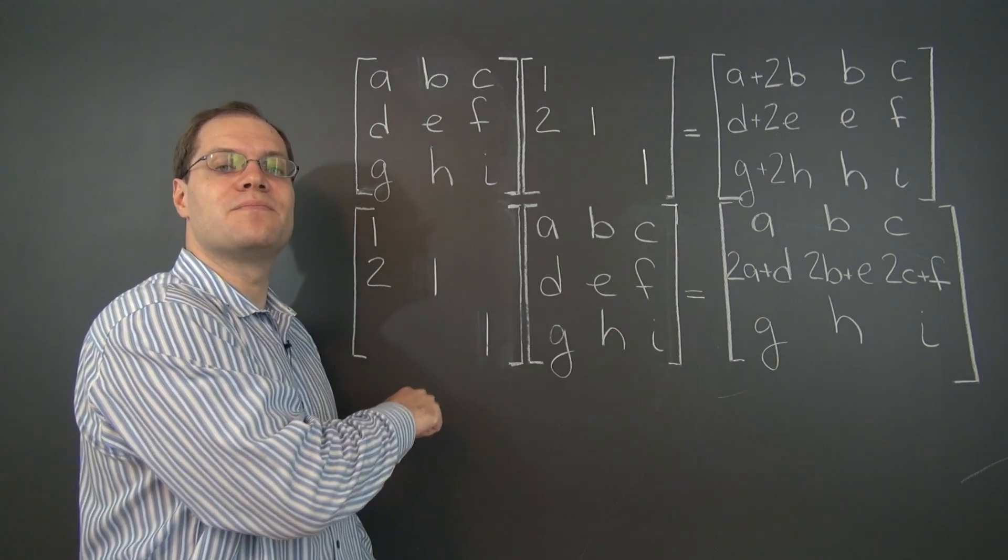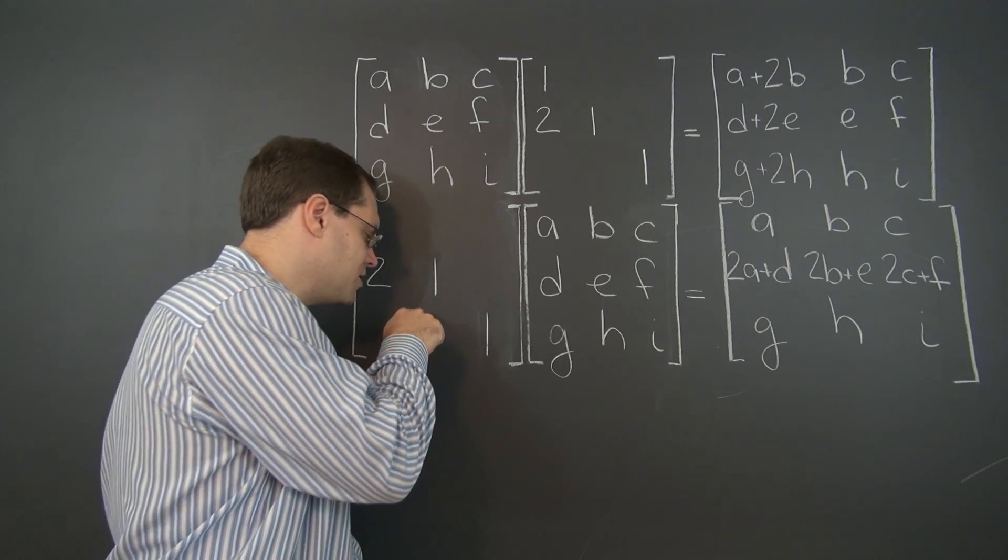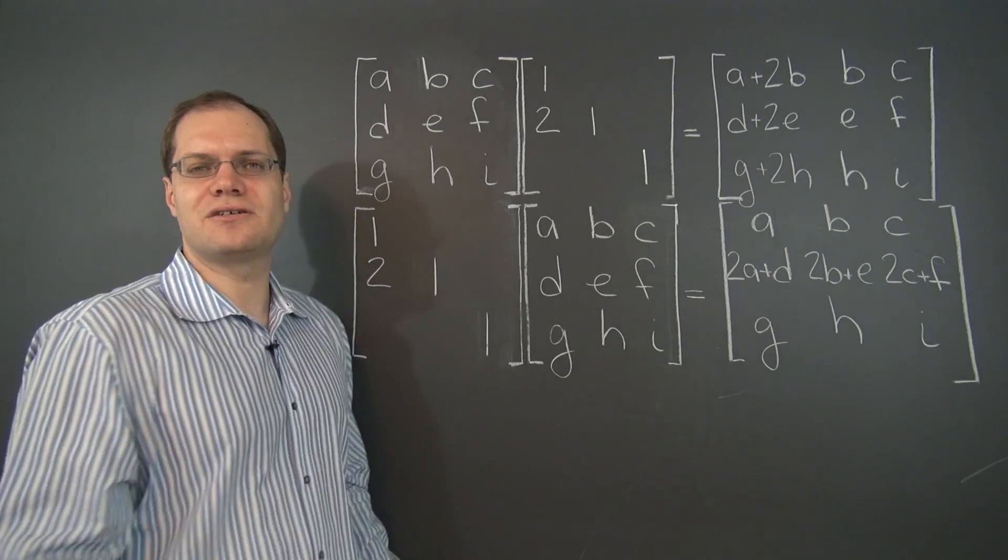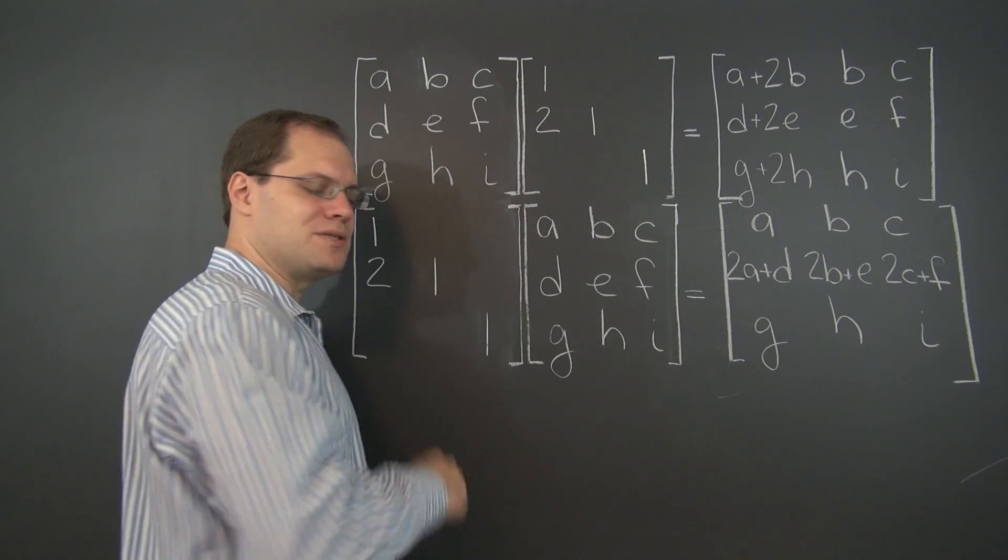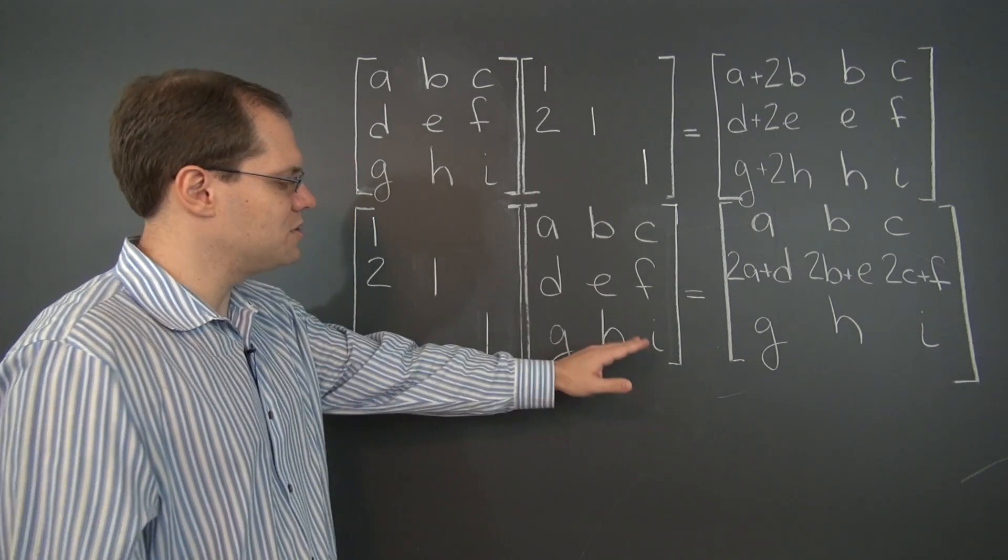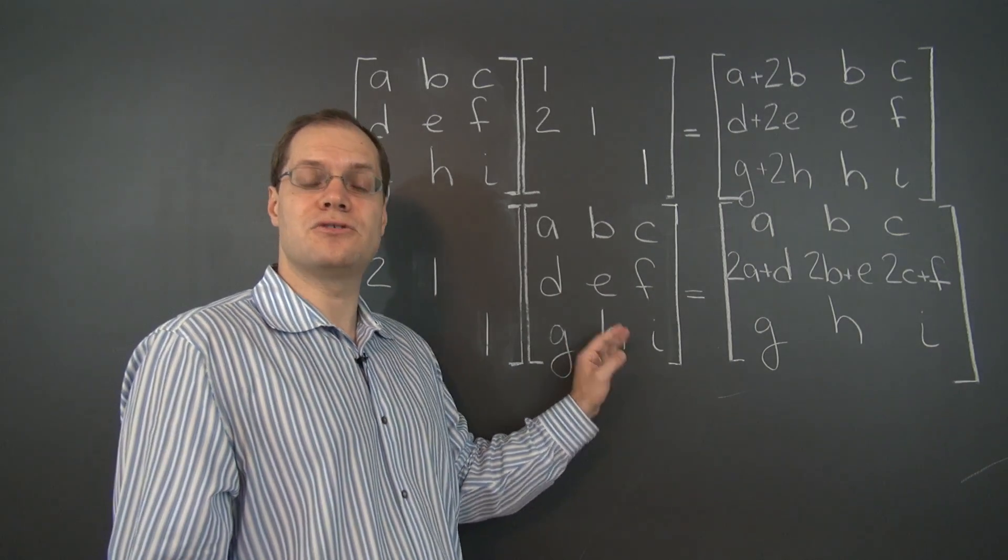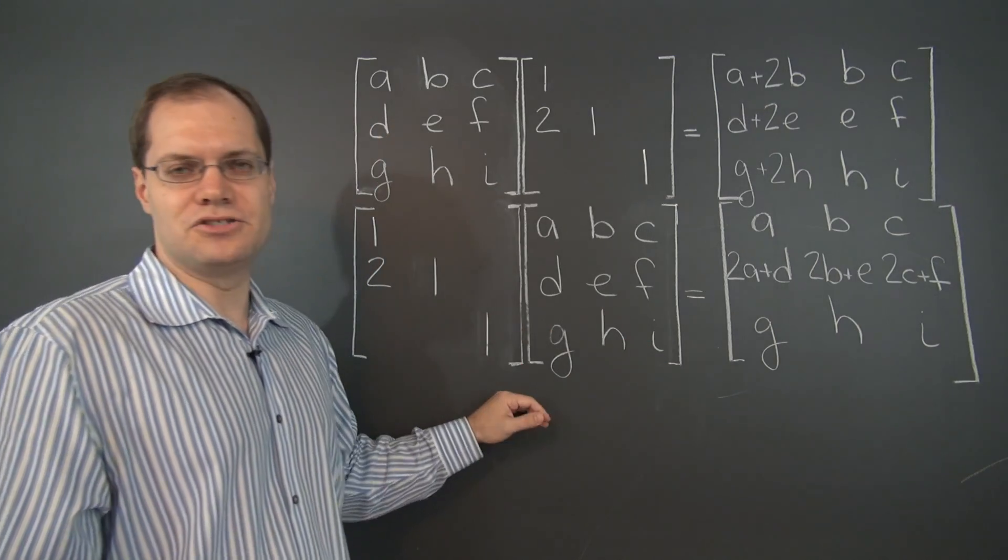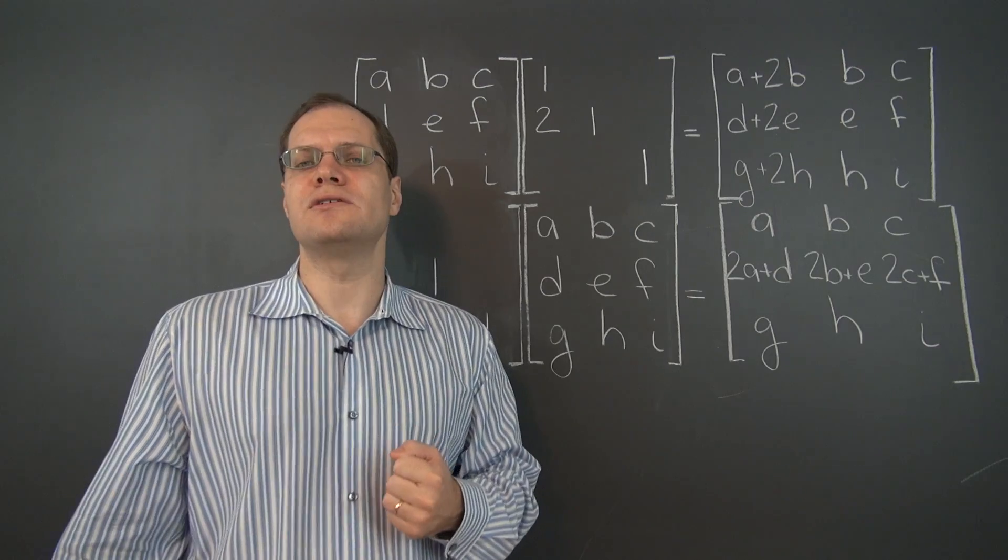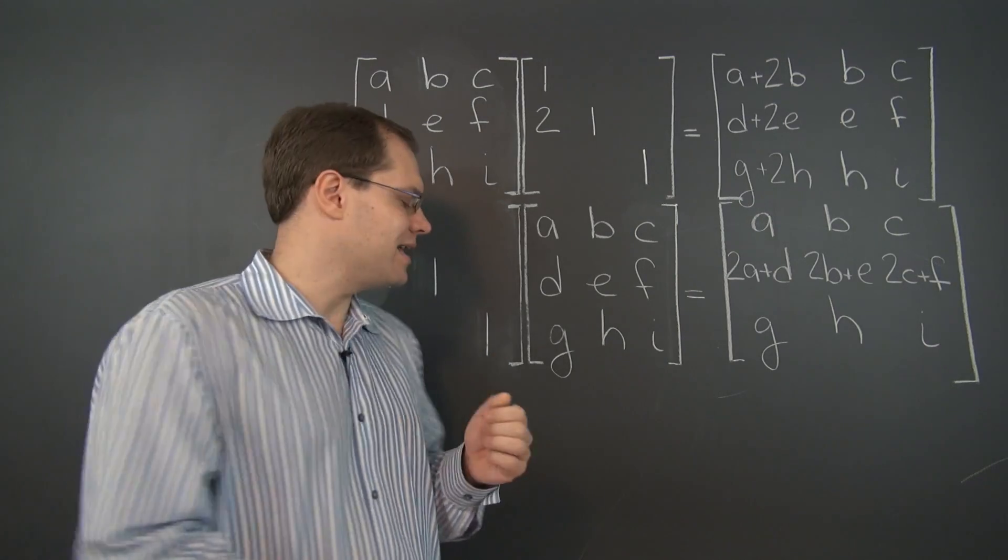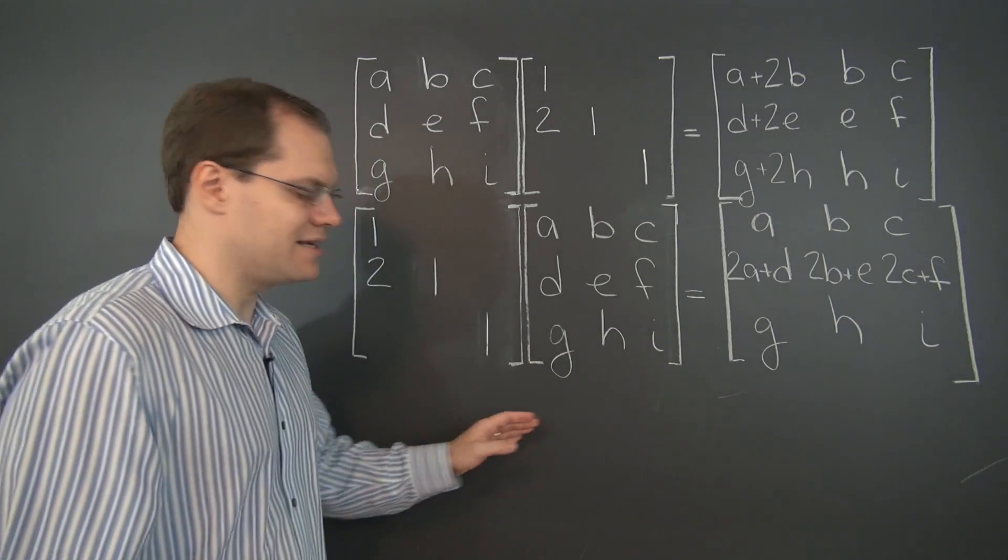It's the very operation that we would have mentioned when we were classifying this matrix as elementary. So whatever you do to the identity to obtain this matrix, that's what this matrix will do to any other matrix on the right in a matrix product. So once again, it's as if it stores that operation and does it to any matrix that appears on the right.